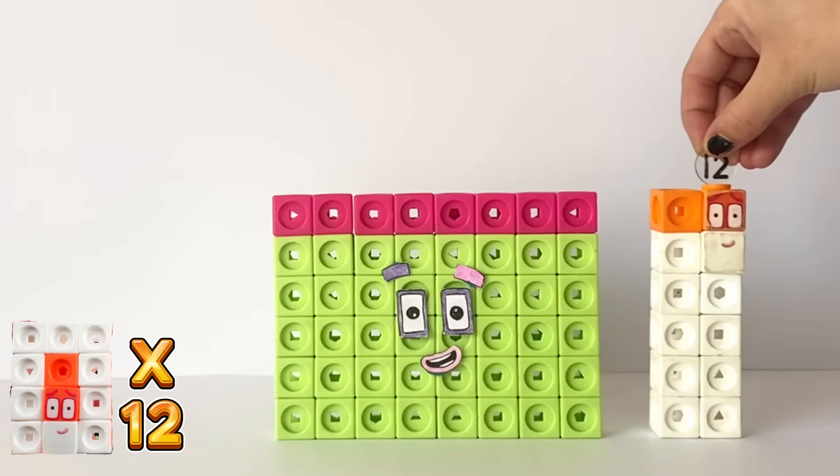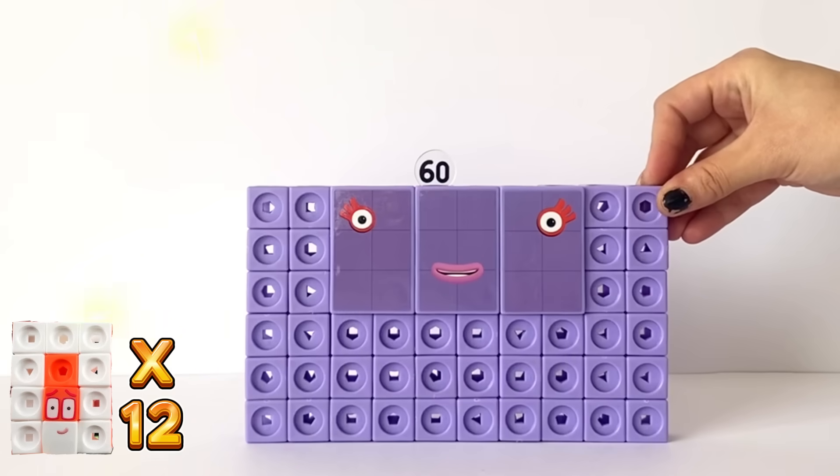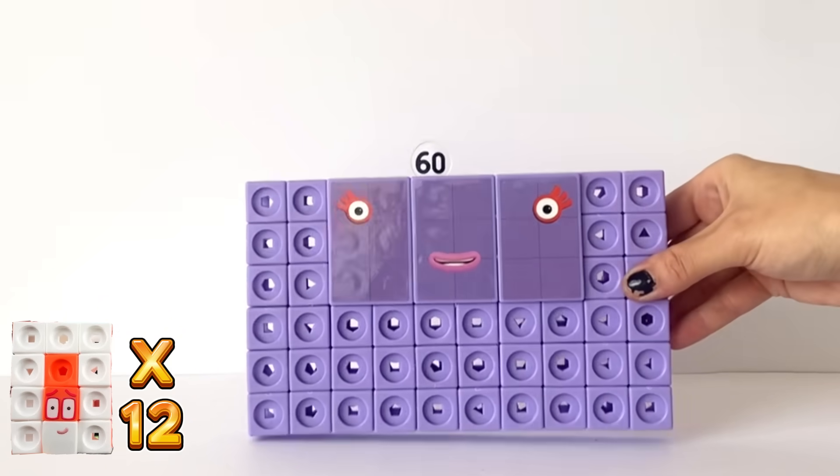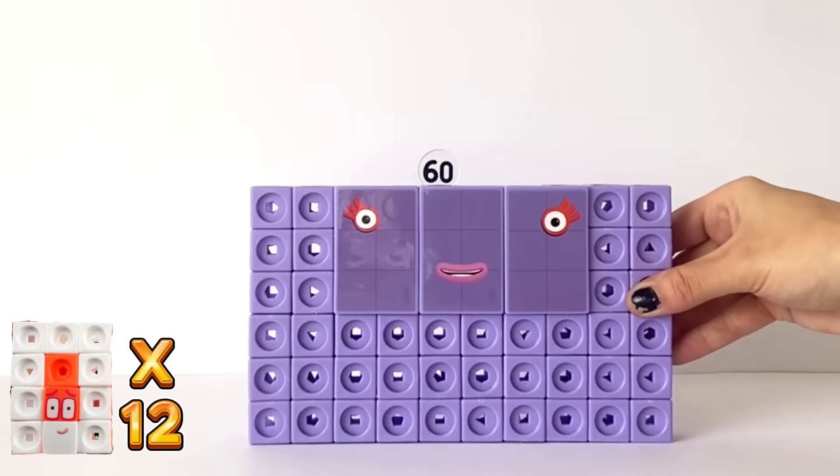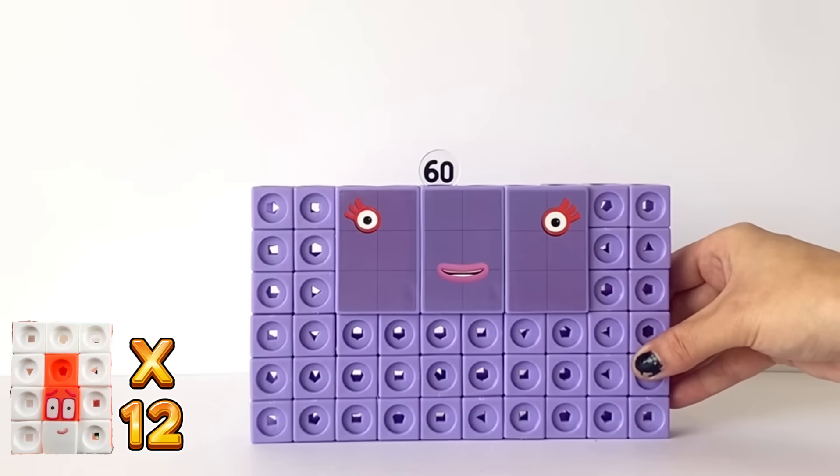5 times 12 equals 60. And 60 is like a giant NumberBlock 6 because 60 is also 10 lots of 6.